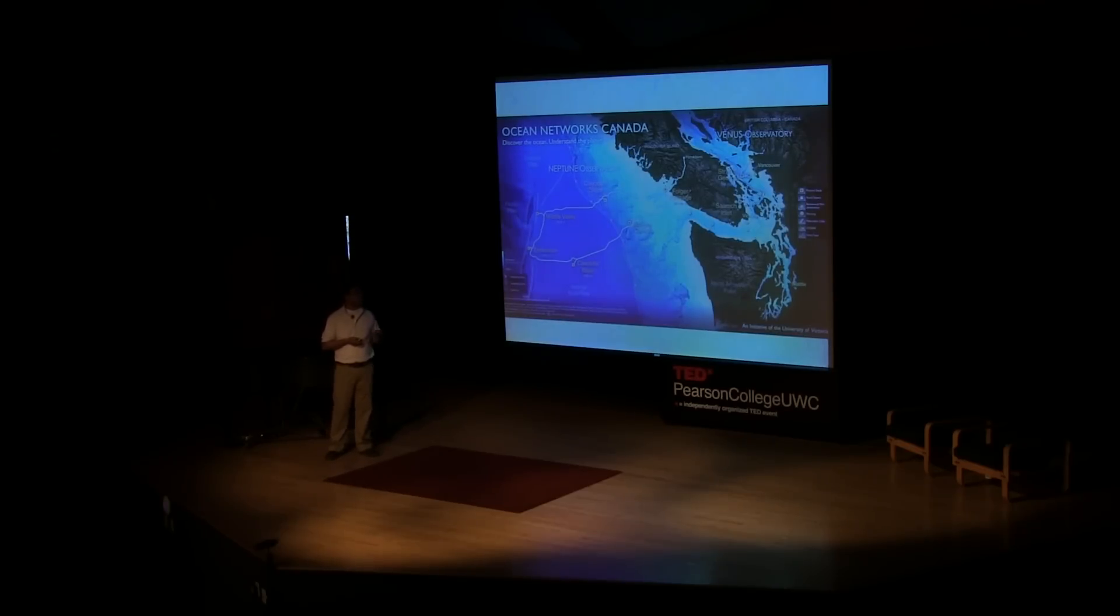So we have the Venus network, which is situated in the Strait of Georgia, in Saanich Inlet, and we also have a much larger Neptune network extending from the west coast of the island off into the deep ocean.